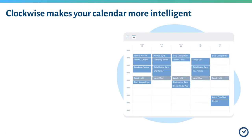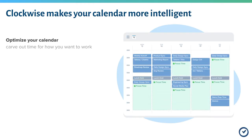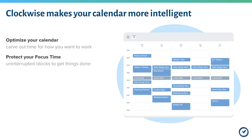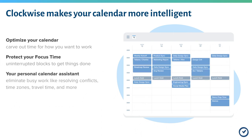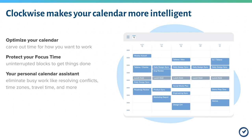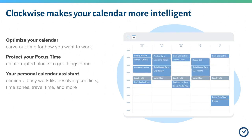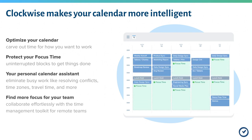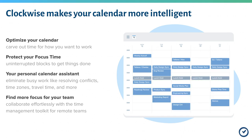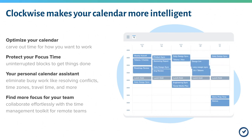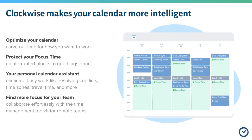Clockwise looks to improve your calendar in the following ways: it will optimize your calendar, protect your newly created focus time, and serves as your personal calendar assistant with features like color coding, personal calendar sync, Slack sync, and more. And we don't only look to get more focus time for you, but we want to find more focus time for your team. Now let's jump into introducing Clockwise's features and how to set up your account for success.